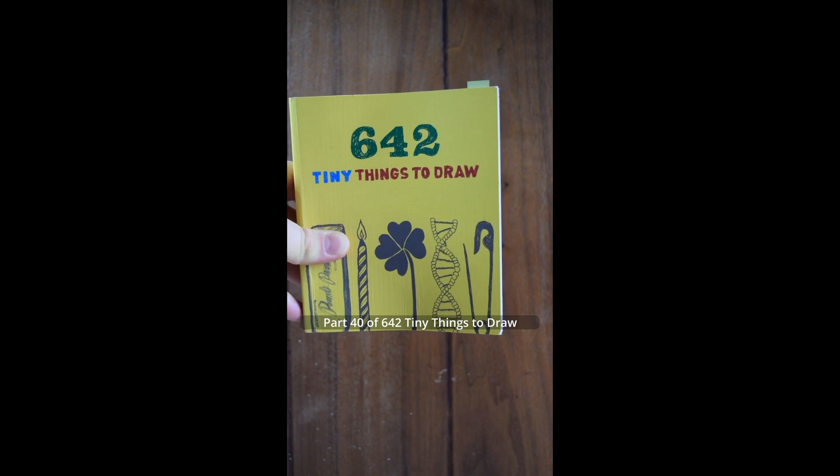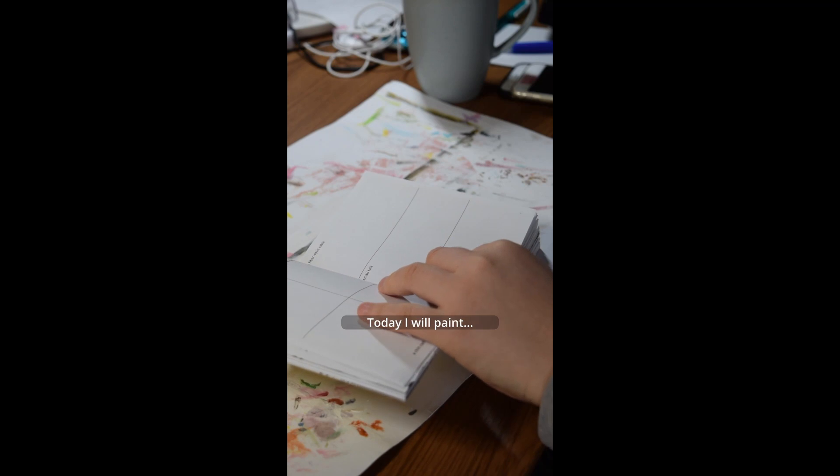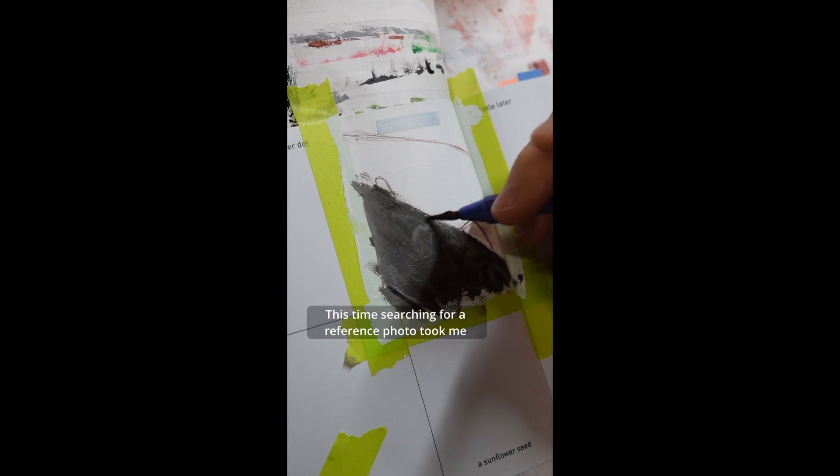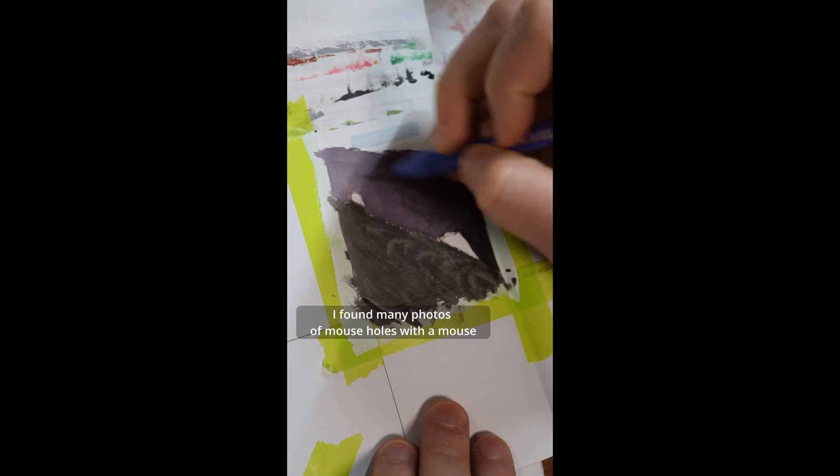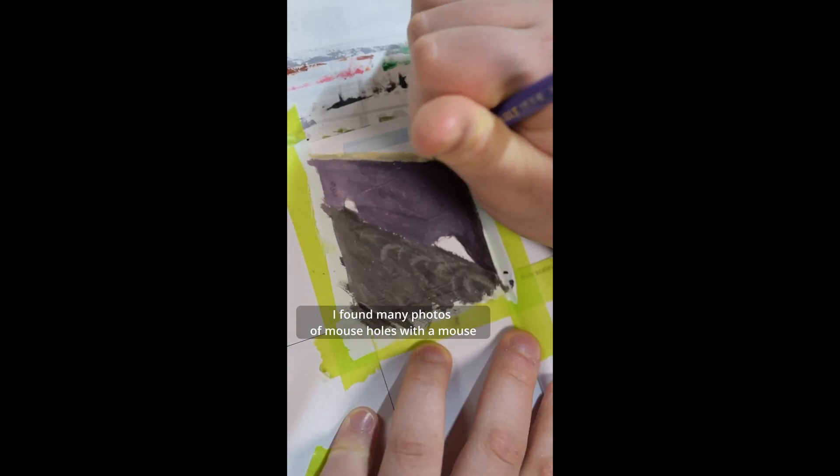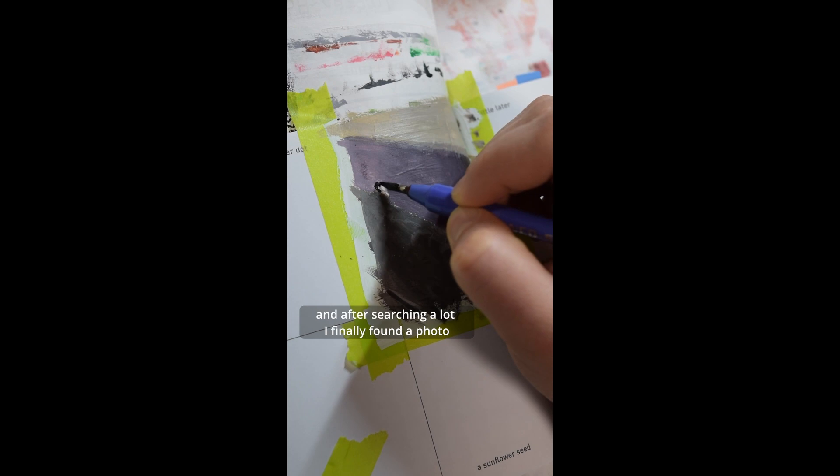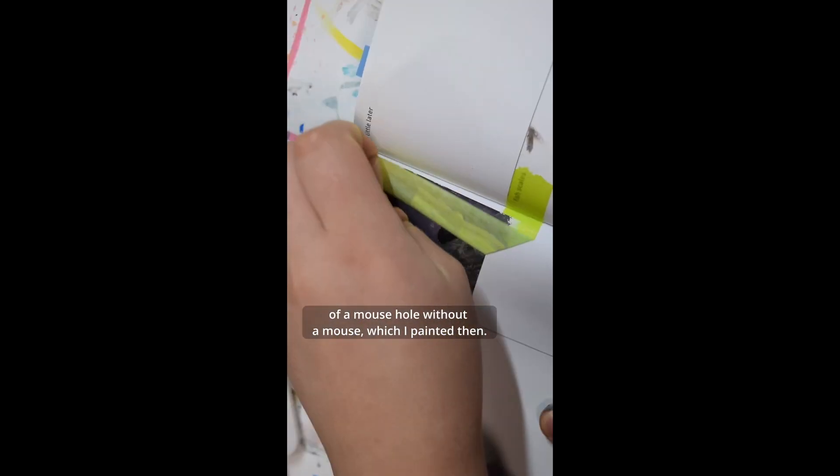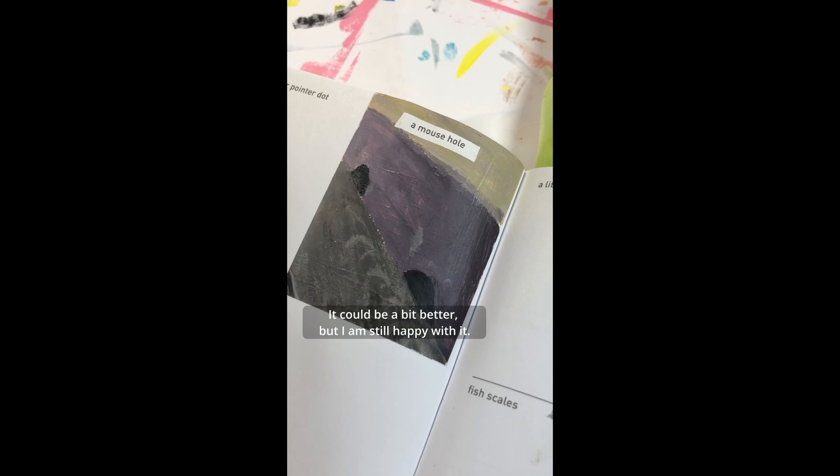Part 40 of 642 tiny things to draw. Today I will paint a mouse hole. This time searching for a reference photo took me longer than I thought it would. When I searched for a photo of a mouse hole, I found many photos of mouse holes with a mouse and I didn't want to draw a mouse. So I searched for a photo without a mouse and after searching a lot, I finally found a photo of a mouse hole without a mouse, which I painted then. And I think the end result turned out good. It could be a bit better, but I am still happy with it.